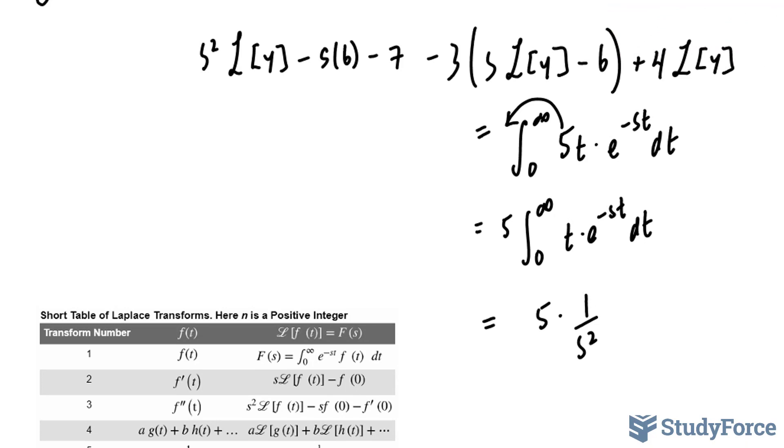To clean this up, let's rewrite this. We have s² times the Laplace transform of y minus 6s minus 7—that takes care of these three terms.